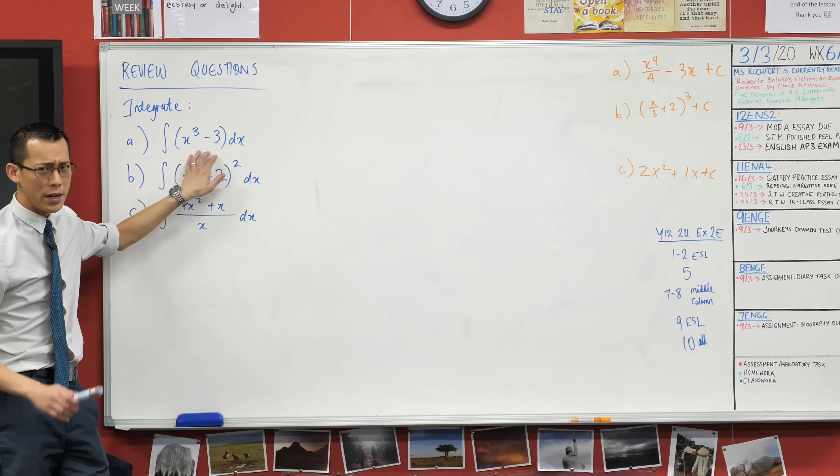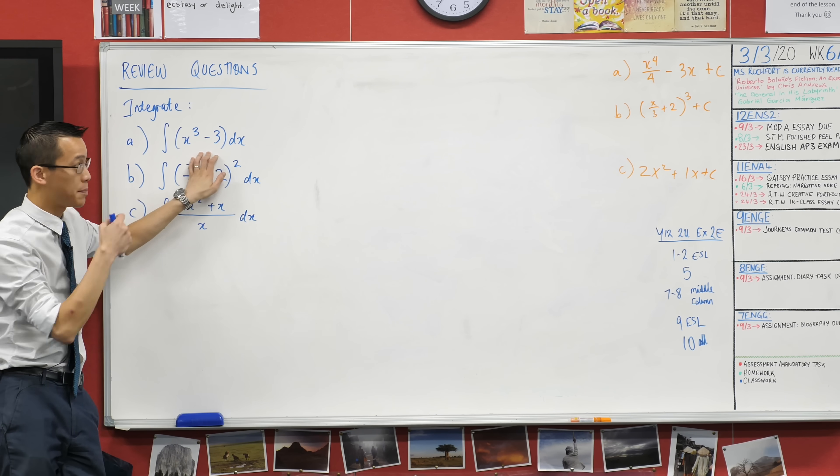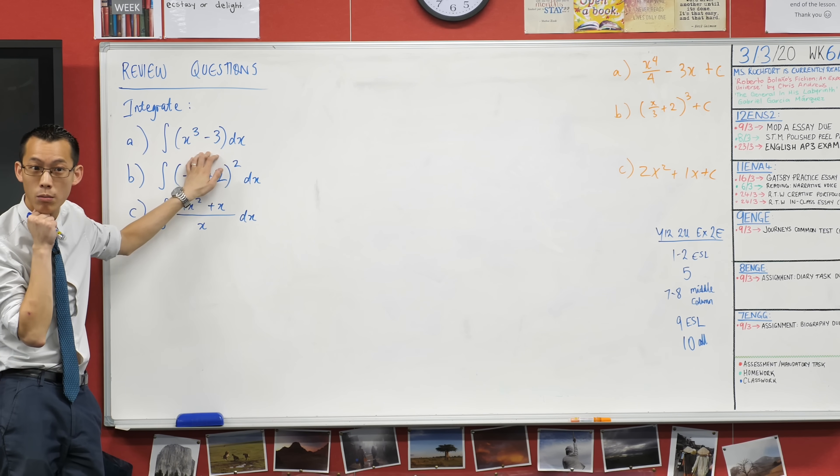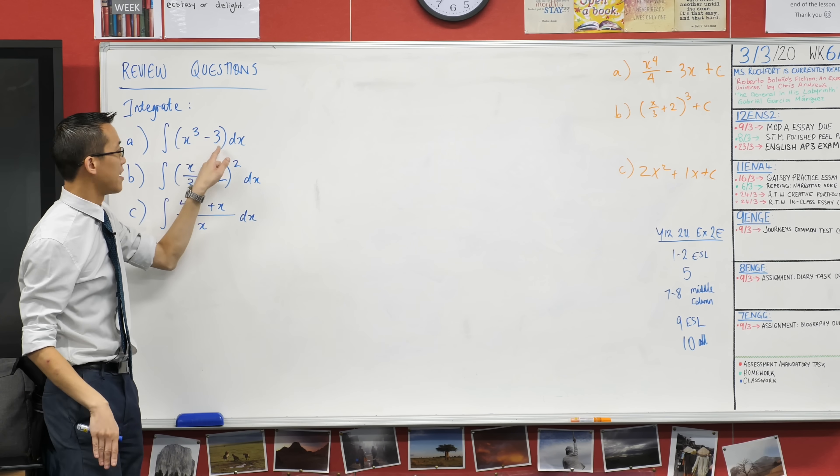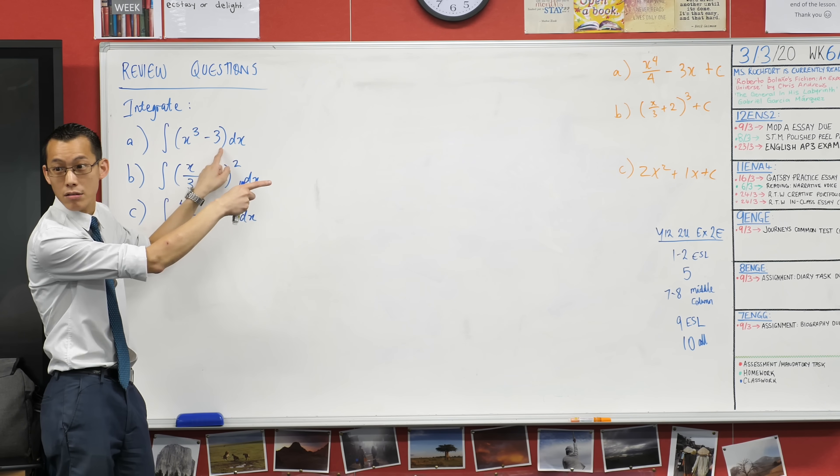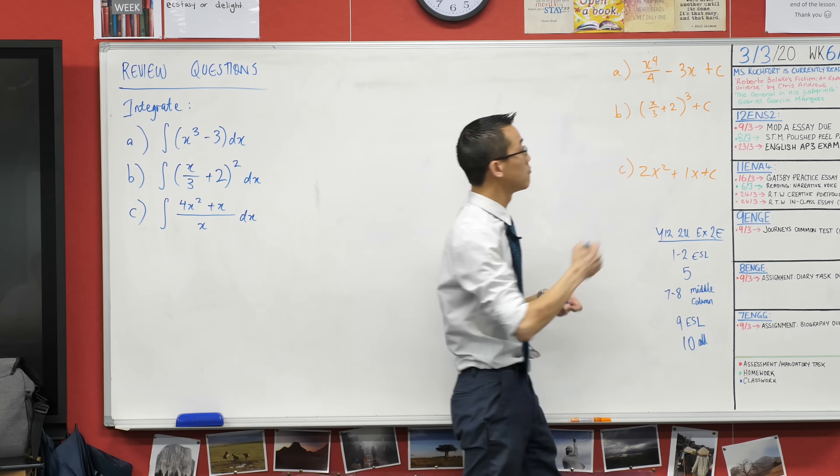Number one, pretty straightforward I hope. This x cubed, we take it first - does it become x to the 4 over 4? Thumbs up. Index up, divide. Minus 3, does that turn into minus 3x? And then the constant integration is hanging around, so we're happy with A. Cool.